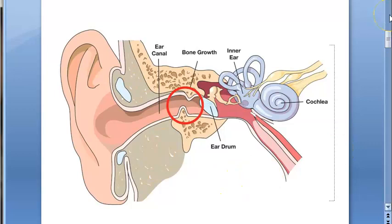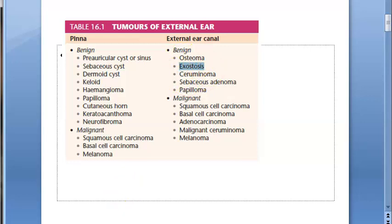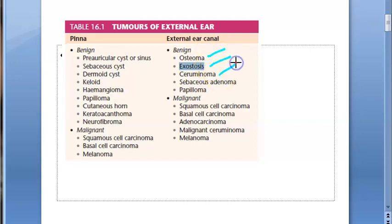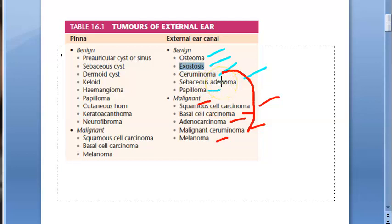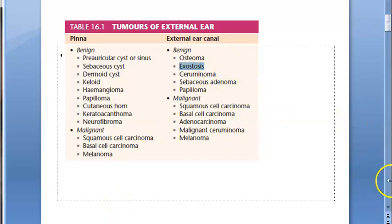Exostosis or surfer's ear is a benign condition of the external ear canal. The benign conditions of the external ear canal include osteoma, exostosis, cerumenoma, sebaceous adenoma, and papilloma. The malignant conditions include squamous cell carcinoma, basal cell carcinoma, adenocarcinoma, malignant cerumenoma, and melanoma. Note that cerumenoma has a malignant counterpart, but exostosis does not have a malignant counterpart in this list.